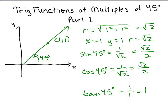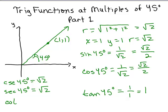Once you have the sine, you can take the reciprocal to get the cosecant. The cosecant of 45 degrees: the reciprocal of 1 over square root of 2 is just square root of 2. The secant of 45 degrees is the reciprocal of the cosine, so also square root of 2. And the cotangent is the reciprocal of the tangent, so it's just 1. So here we have all six trig functions of 45 degrees.